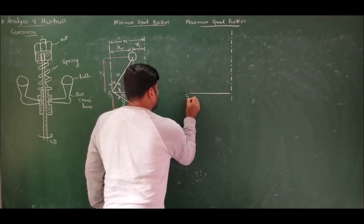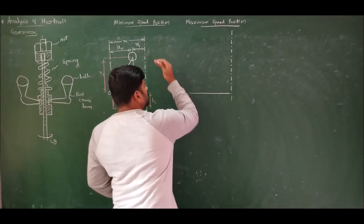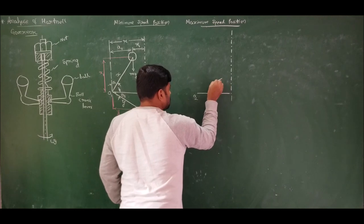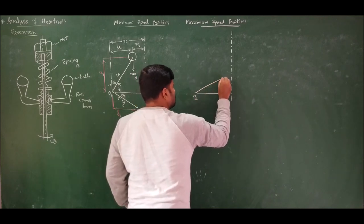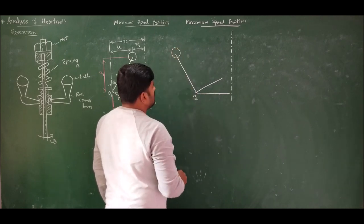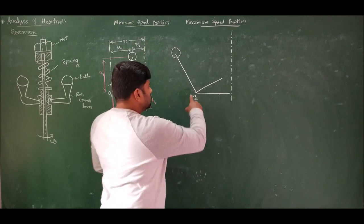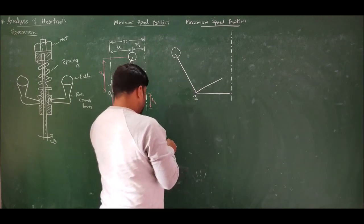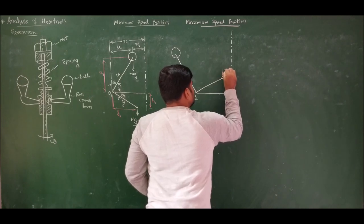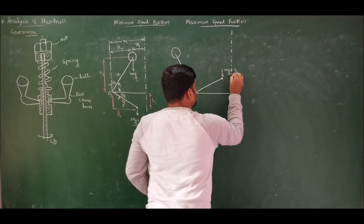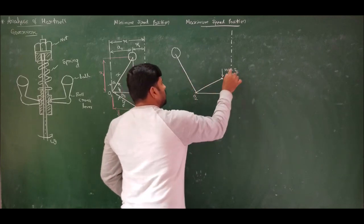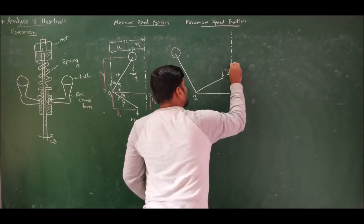The sleeve should move upward and the balls should move outward. At the maximum speed position, the load acting at this point is Mg plus S2 by 2, where S2 is the spring load at maximum speed position, divided by 2 because we are taking only half of it for analysis. The centrifugal force acting outward is fc2, and at minimum speed position it was fc1.